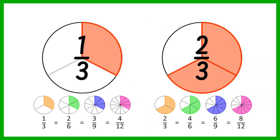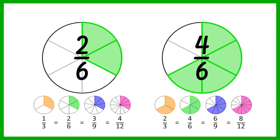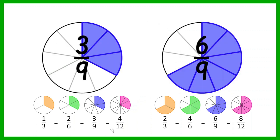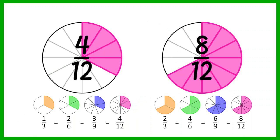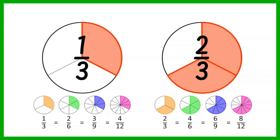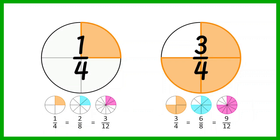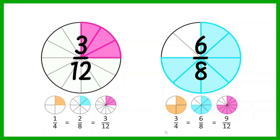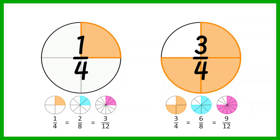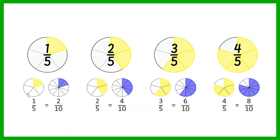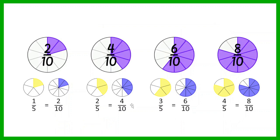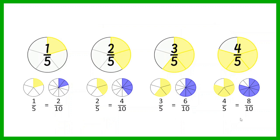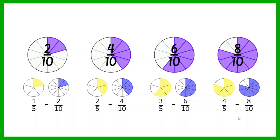Here are a couple more examples of equivalent fractions. Here I've got fractions that are all equal to a third. Here I've got fractions that are all equal to two thirds. Here I've got fractions that are all equal to a quarter, and here these fractions are all equal to three quarters. Over here I've got fractions that are all equal to a fifth, these are both equal to two fifths, these are equal to three fifths, and these are equal to four fifths.